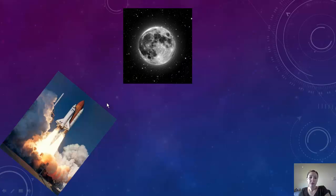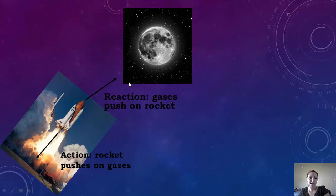Alright, so another example we can look at is when a rocket is flying to the moon. So you have the action, which is going to be the rocket that pushes on the gases. And the reaction is going to be the gases that push on the rocket. So because of this, it'll propel the rocket into the atmosphere and then eventually into space.